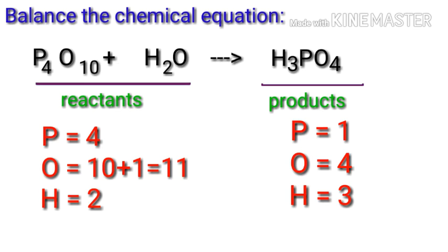In this equation, we need to balance the phosphorus atoms first. To do this, we need to put a coefficient of four in front of H3PO4.